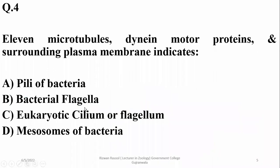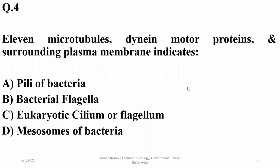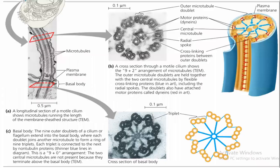Question 4: 11 microtubules, dynein, and motor proteins, surrounding plasma membrane — this indicates a eukaryotic cilium or flagellum. Bacterial flagella do not have microtubules, so options A and B are not the answer. The right option is eukaryotic cilium or flagellum. In the diagram you can see microtubules, dynein arms, and their arrangement in the nine-plus-two pattern of cilium or flagellum.